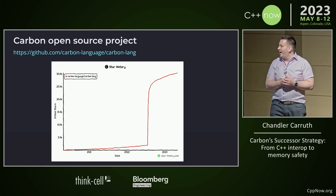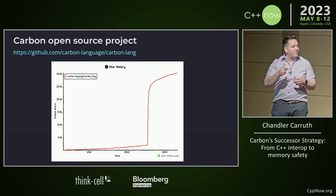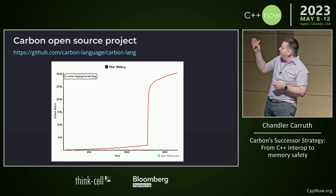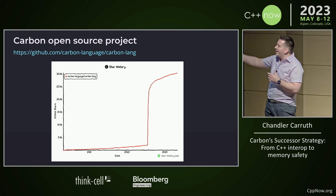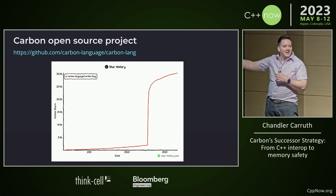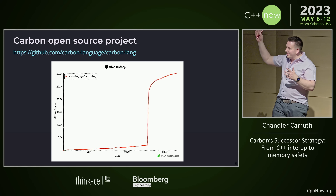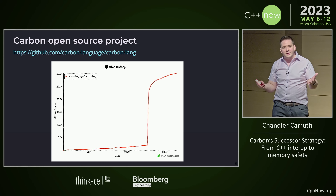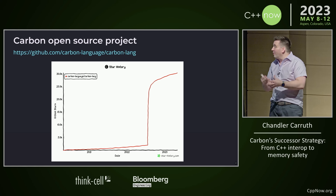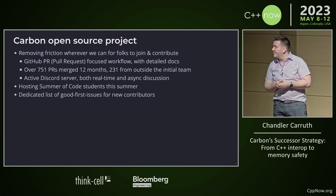Once we announced Carbon, this is the star graph on GitHub. You can kind of see where we announced the project — it's not too subtle. It's grown and it's nice, so there's a lot of at least passive interest in what we're doing. I don't know how valuable stars are, but there seems to be some real passive interest.